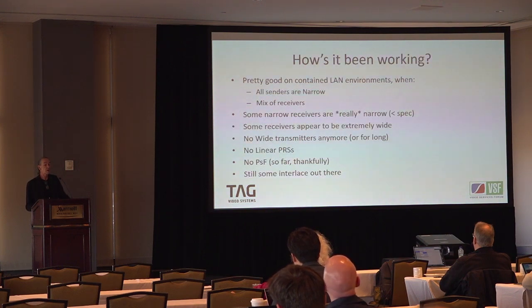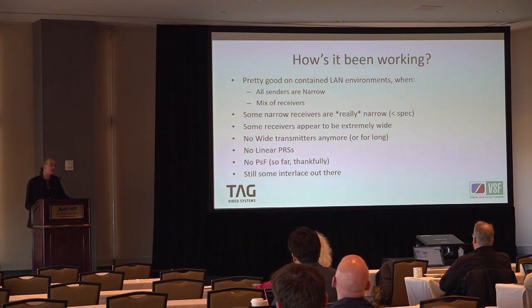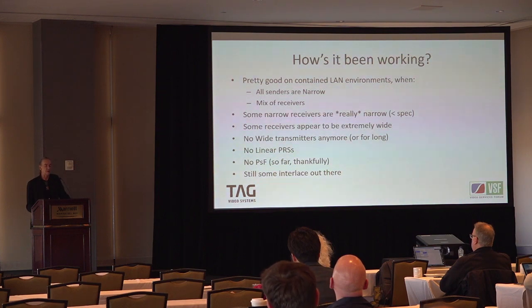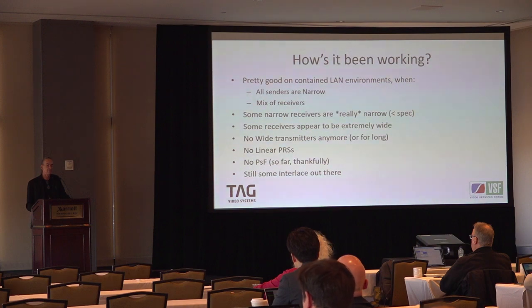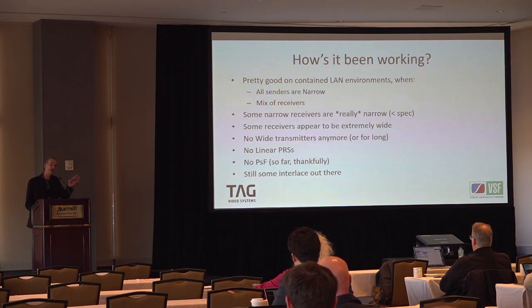How has it been working? In a contained LAN environment when all senders are narrow and whatever receiver mix is available, it works pretty well. Some narrow receivers are a little less than narrow — we've discovered one or two vendors who, due to hardware constraints, have squeezed the packet buffer, so they fall over on IAT sooner. Other receivers appear extremely wide, which is good. We don't see any wide transmitters anymore — software implementations now can pretty much do narrow using RiverMax or equivalent libraries. We still don't see linear packet reschedules.